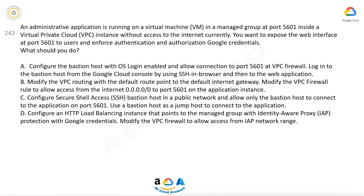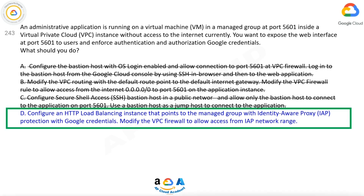Option C: Configure Secure Shell Access (SSH) Bastion host in a public network, and allow only the Bastion host to connect to the application on port 5601. Use a Bastion host as a jump host to connect to the application. Option D: Configure an HTTP load balancing instance that points to the managed group with Identity-Aware Proxy (IAP) protection with Google credentials. Modify the VPC Firewall to allow access from the IAP network range. The correct answer is D.